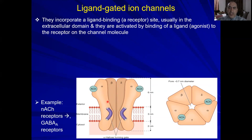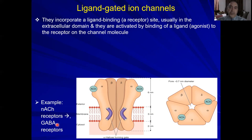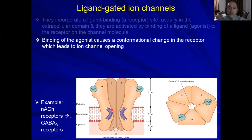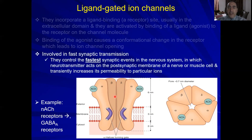The ligand-gated ion channel has a kink formed by alpha-helices making a gate — normally closed. Upon binding of the ligand, for example acetylcholine binding to the nicotinic acetylcholine receptor, or GABA binding to the GABA-A receptor (note: GABA-A, not GABA-B), a conformational change occurs in the receptor, leading to opening of the ion channel. These are the fastest synaptic channels in the nervous system.